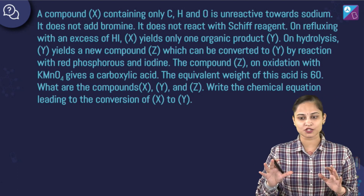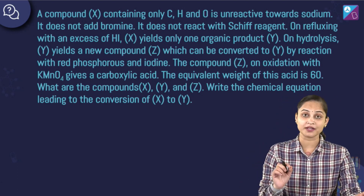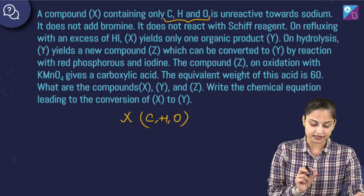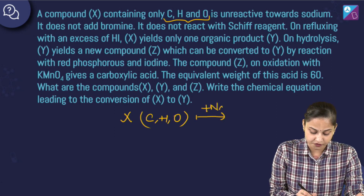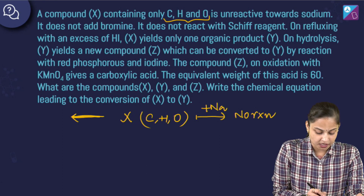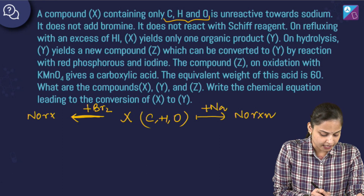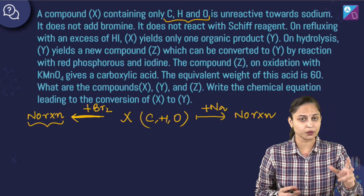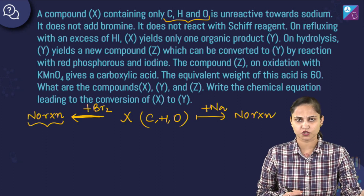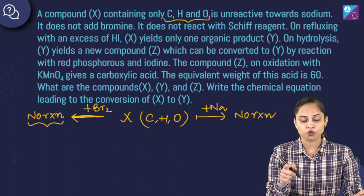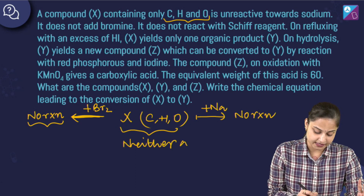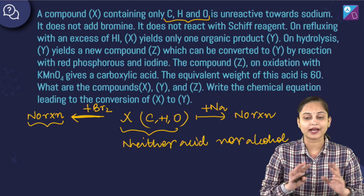Let's go line by line. Compound X contains carbon, hydrogen and oxygen. It is unreactive towards sodium — that means no reaction takes place with sodium. It does not add bromine, meaning it won't give the bromine test. Bromine test is for unsaturation, so since it's not reacting with bromine, it does not contain any unsaturated functionality. Also, it's not reacting with sodium, so we can say compound X is neither an acid nor an alcohol.